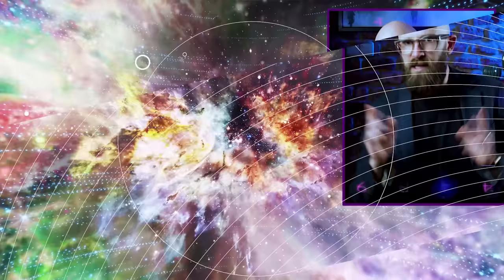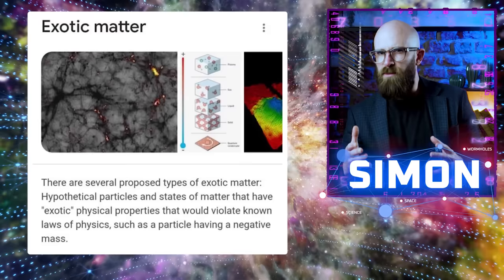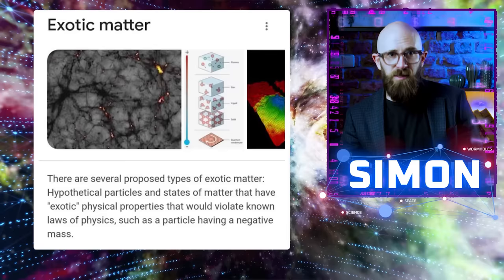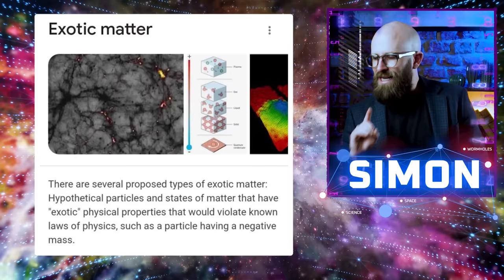Exotic matter would have odd behavior that seems to run counter to the laws of physics, sometimes breaking those laws. For the case of wormholes, the exotic matter we want would need to have negative mass. This violates one of the energy conditions in general relativity, specifically that the energy density of a region of space cannot be negative.